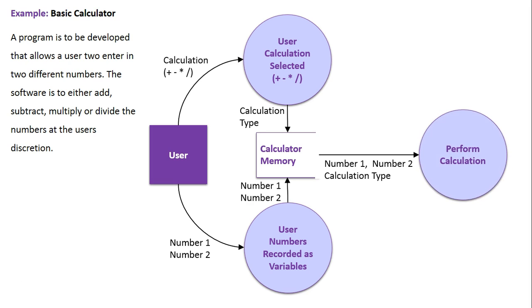Now that we have this information, number one, number two, and the calculation type can all be used in another process called perform calculation. This is where the calculation would be performed.